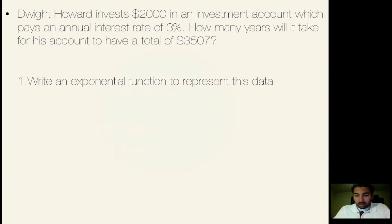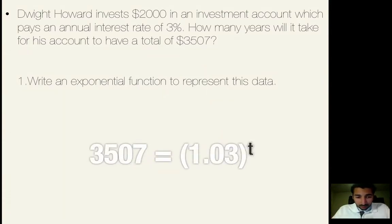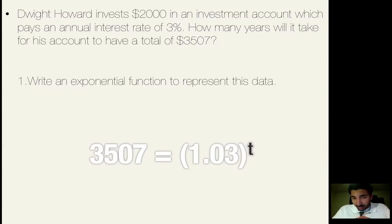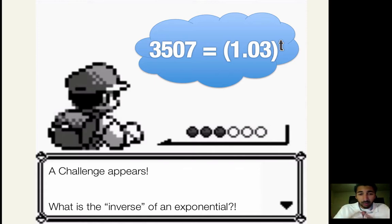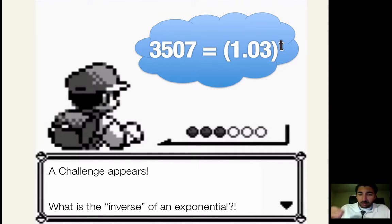If we write an equation to represent this data, it would look like: $3,507 equals 2,000 times 1.03 — that's 1 plus the interest rate of 0.03 — raised to the time t, where time is the exponent. Now there's a bit of a problem. If we were to solve for time t, normally you'd use the inverse of whatever's in the function: division for multiplication, subtraction for addition. But that's not what's happening here. The t is the exponent, so we need to find the inverse of an exponential, which we haven't learned yet.